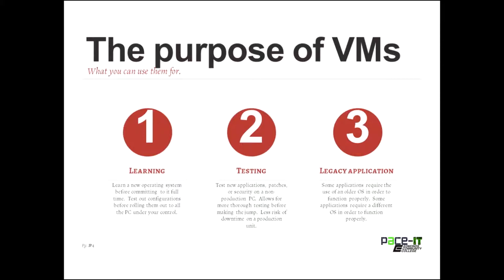Another good use is running legacy applications that require an older operating system. For example, Windows XP is no longer supported by Microsoft, so you may be running everything on Windows 7 or Windows 8.1. If you have a mission-critical legacy application that requires XP, you don't want to run XP on your desktop because it's no longer secure. You can run XP within a VM and remain more secure while still having your newer operating system.